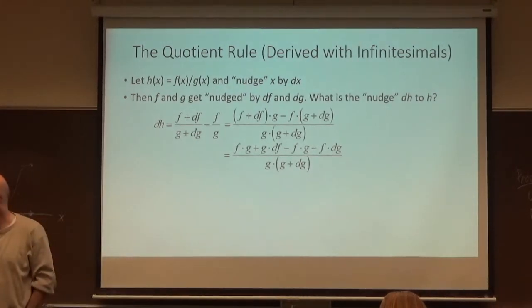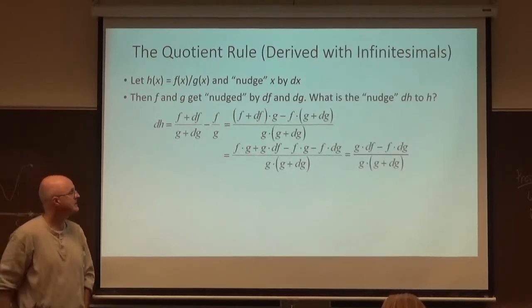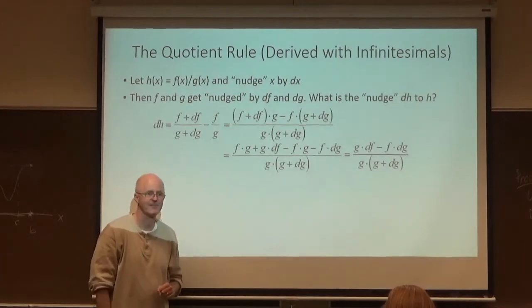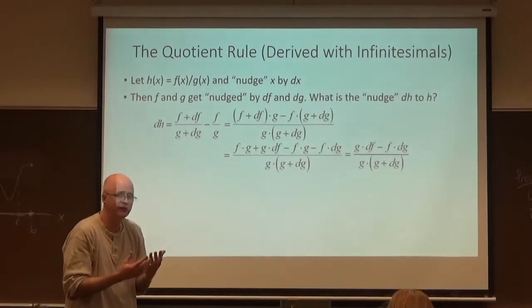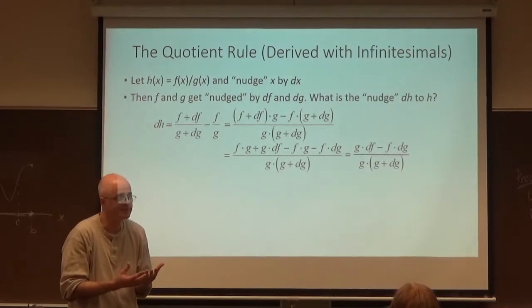All divided by, on the bottom still, g times g plus dg. Which can be simplified a little bit more because the f times g cancels out. Giving you that.